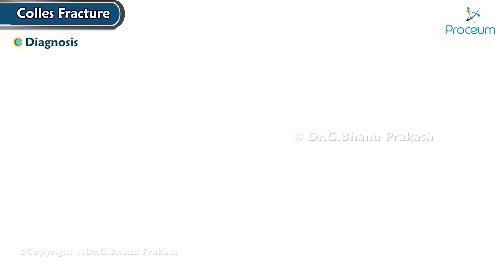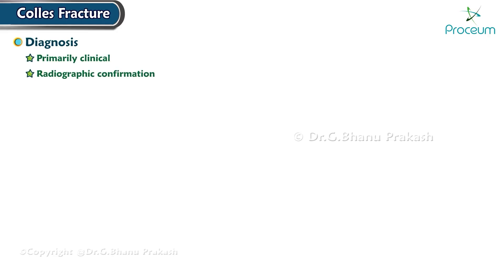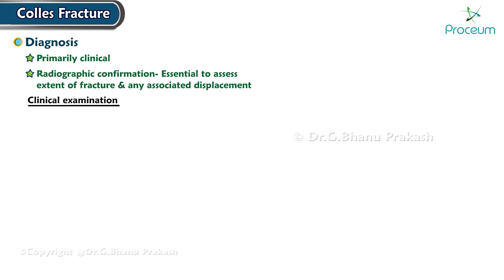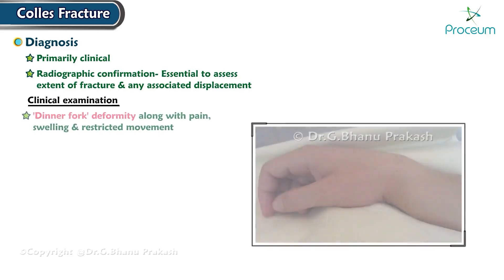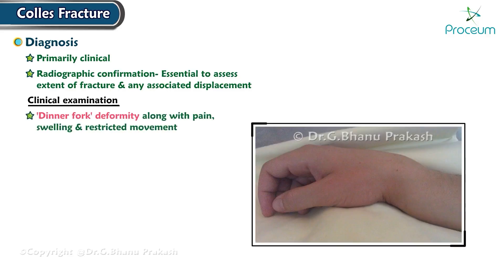The diagnosis of a Collis fracture is primarily clinical, but radiographic confirmation is essential to assess the extent of the fracture and any associated displacement. Classic physical findings like dinner fork deformity, along with pain, swelling, and restricted movement, point towards a Collis fracture.